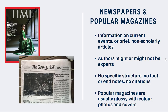Newspapers and popular magazines are ideal for information on current events or for brief, non-scholarly articles. These articles are written by journalists and authors who might or might not be experts in the subject of the article. They're written for a general audience, free of technical jargon, and easy to understand. They don't typically follow a specific structure, don't include foot or endnotes, don't cite their sources using a bibliography or works cited page, and they are not peer-reviewed.